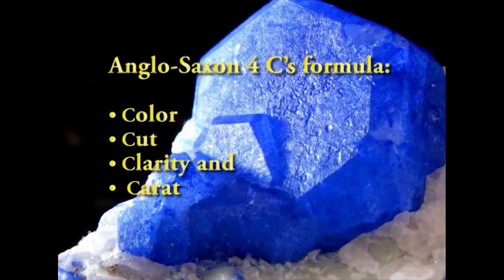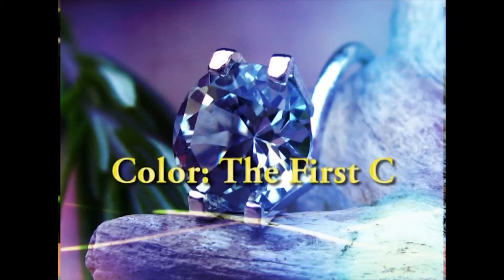The appearance of a gem is a combination of many separate factors, each related to and affected by the others. The criteria to objectively evaluate the beauty of gemstones have been developed through the years and can be summed up by the 4 C's formula: Color, Cut, Clarity and Carat. The quality and beauty of a gemstone are related to the balance of these four parameters. For a colored stone — any gem other than diamond — color is the most important factor in determining quality.